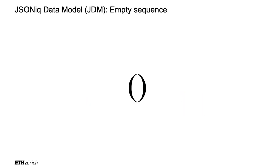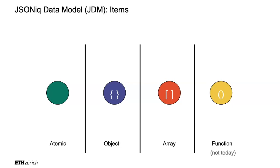This is the empty sequence — it's fine too, like the empty table. An item can be an object, an array, or an atomic value. There are also functions — useful for higher-order functions and machine learning — but ignore those for now. Atomic values, objects, and arrays — you can build sequences of these. Every single expression in JSONiq takes sequences of items as inputs and spits sequences of items as outputs. It's that simple, and then it's a Lego game.